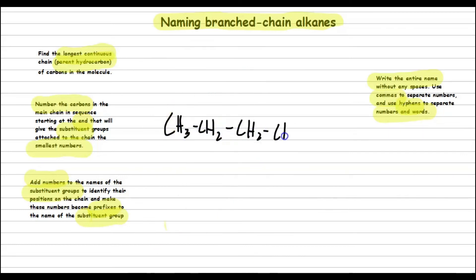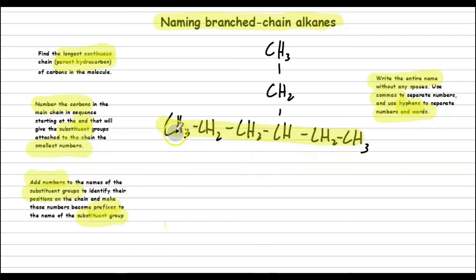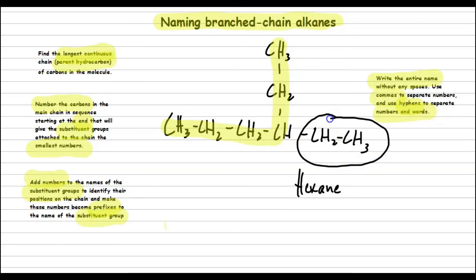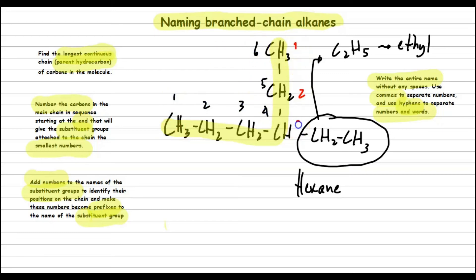Let's try another example. The parent hydrocarbon can be identified going either the straight way or another path — both give 6 carbons — so that is hexane. The substituent has 2 carbons and 5 hydrogens; this is called ethyl. For the numbering: left to right gives number 4, but right to left gives number 3 — so we choose right to left. The name of this alkane is 3-ethylhexane.